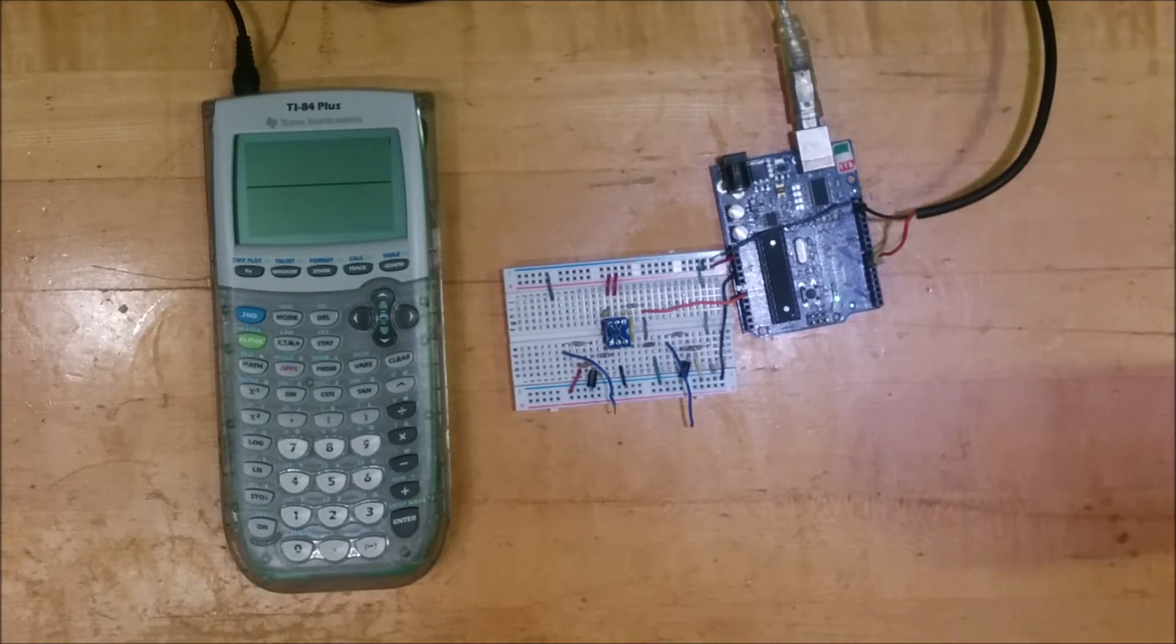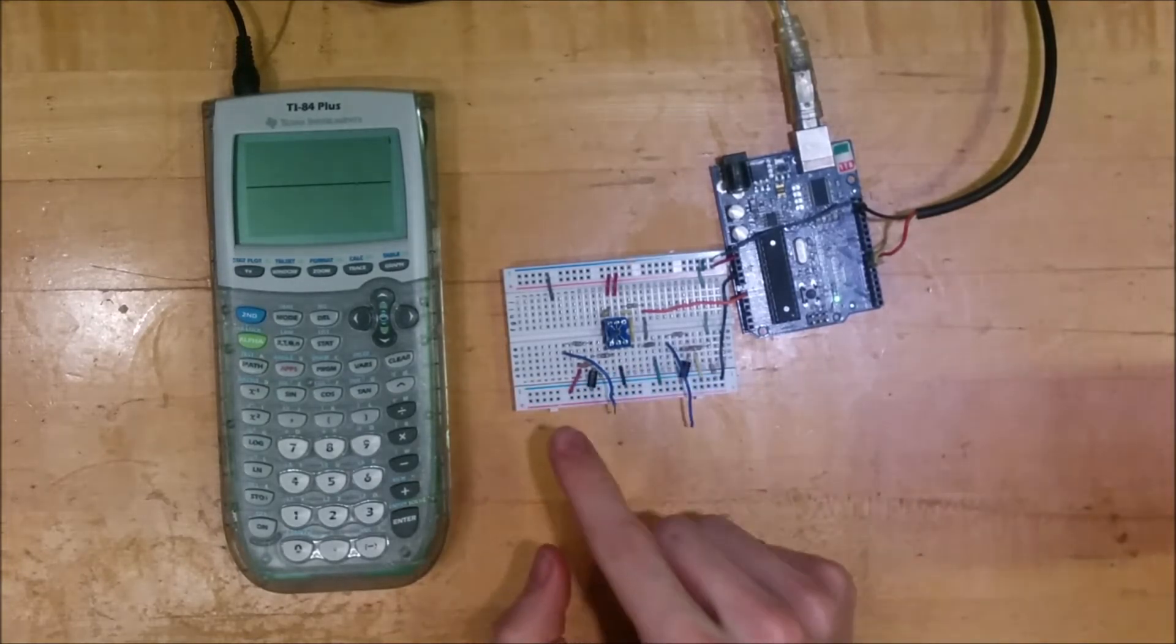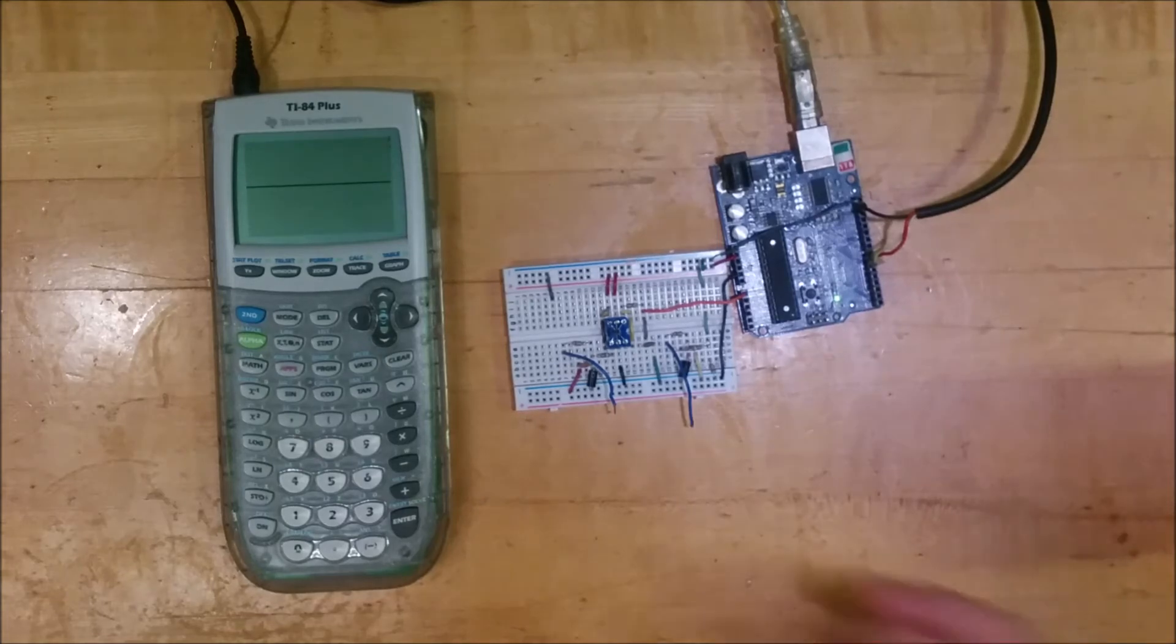What makes this work is a breadboard with an operational amplifier and a few resistors and capacitors that do voltage division and signal smoothing.